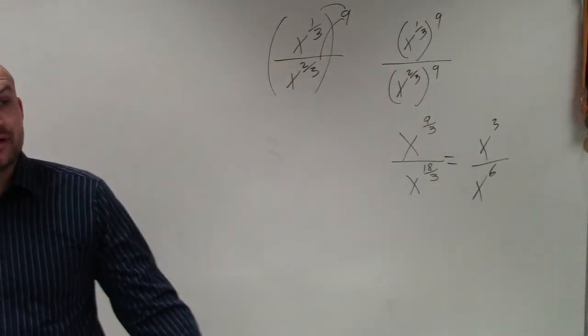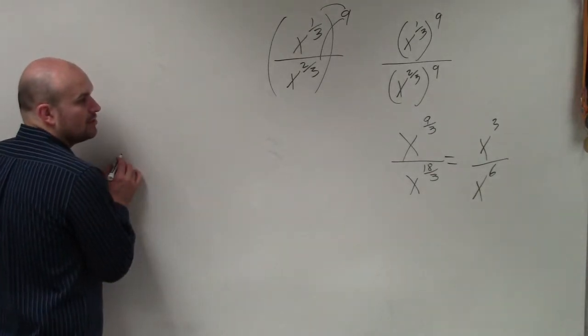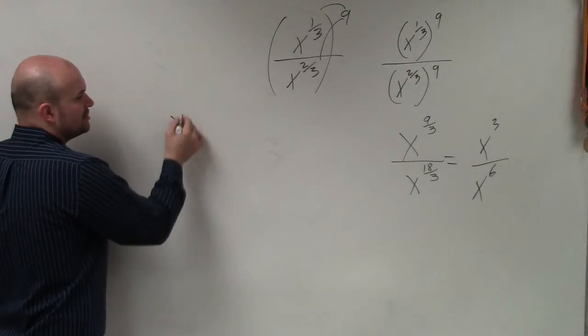And now, using the division property, remember, what do we do when we have the quotient of two exponents with the same base? You subtract.